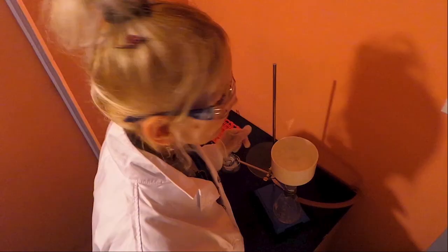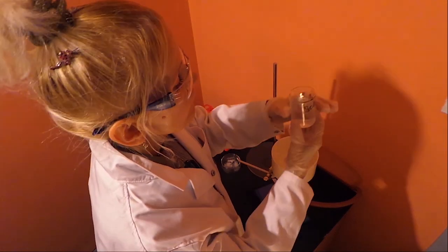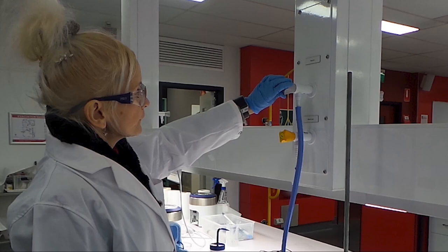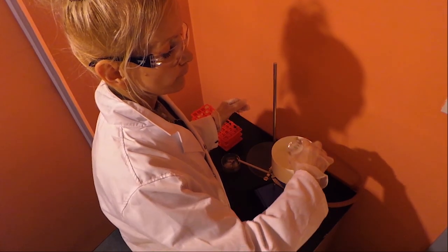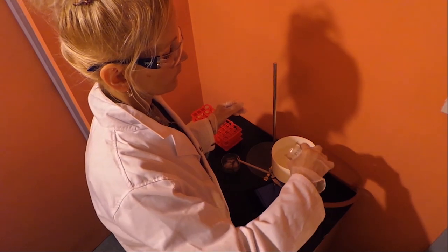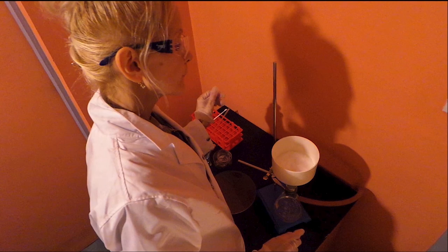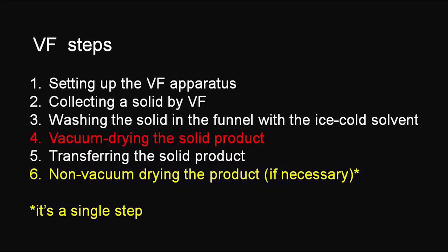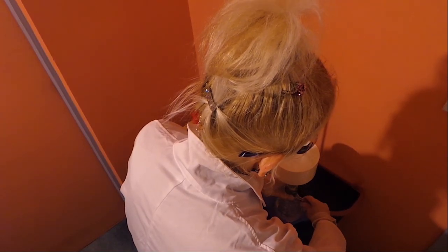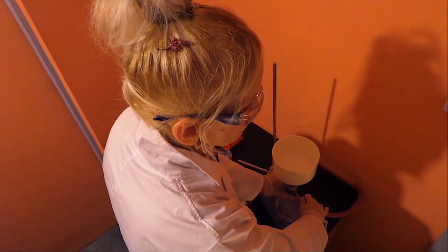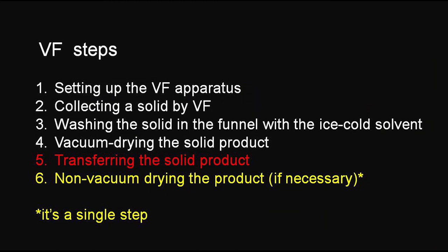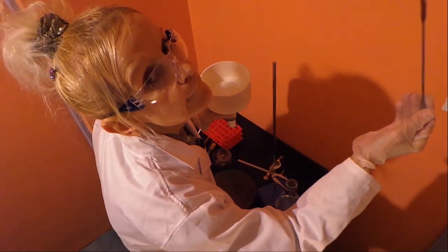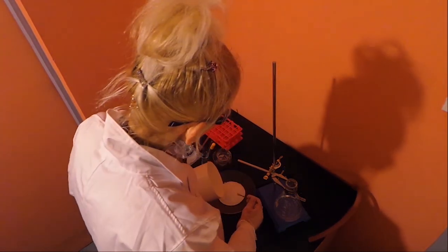Once all mother liquor has passed through the filter medium, we can start washing the solid in the funnel with ice-cold solvent. Reduce the vacuum and pour a small portion of cold solvent onto the solid, then apply vacuum. Repeat two more times to ensure all impurities are removed. Dry by continuing to pull air through the solid product for about 10 minutes. If no trap is used, disconnect the tubing from the filter flask before turning off the vacuum. To transfer the solid product onto a watch glass, take the funnel off the filter flask and use either forceps or a spatula to slide the filter paper onto the watch glass.